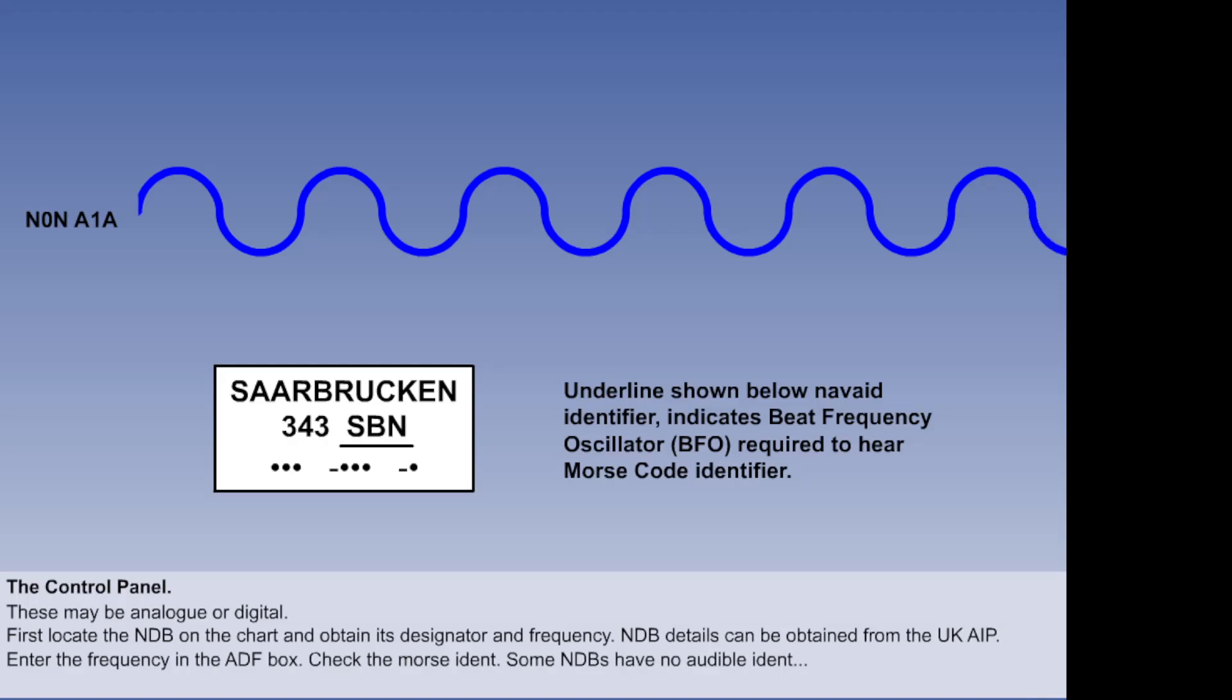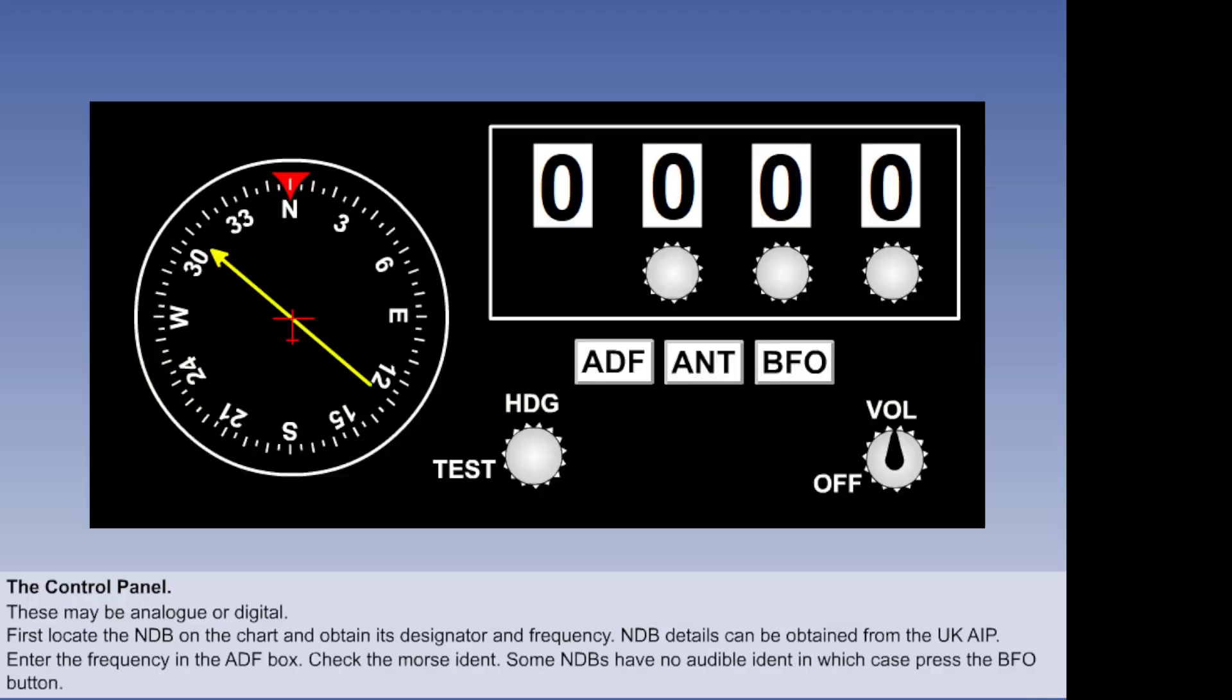On Jeppesen maps, the three-letter identifier of such stations is underlined. By selecting the Beat Frequency Oscillator button, BFO, an oscillator within the ADF is activated, which creates an audible output from a non-modulated N0N and A1A signal. The bearing reading must be ignored, as the loop antenna has been isolated.